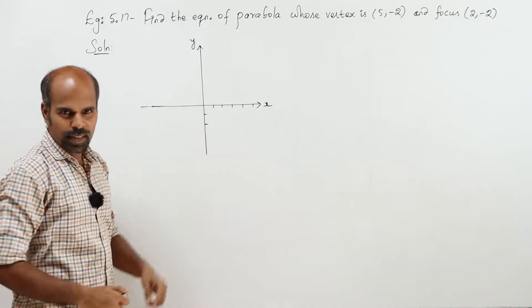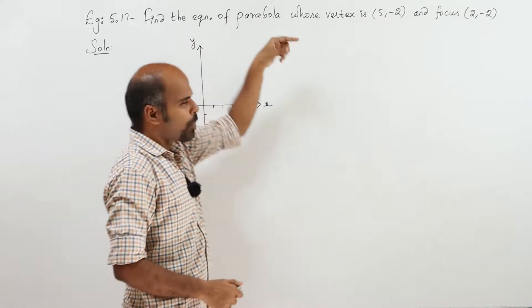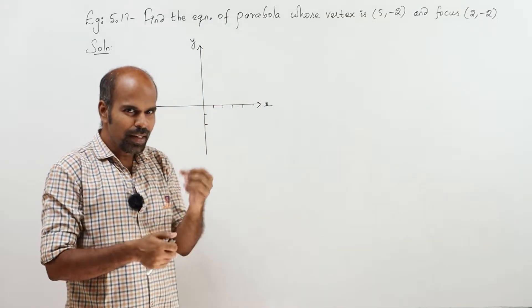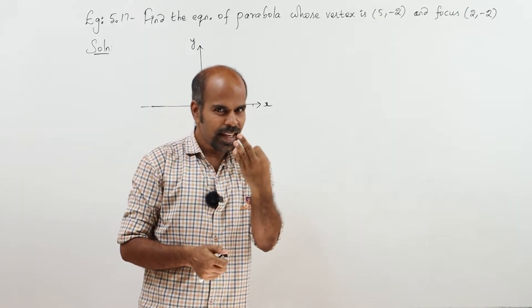Example 5.17. Find the equation of parabola. So our aim is to find h, k, a.